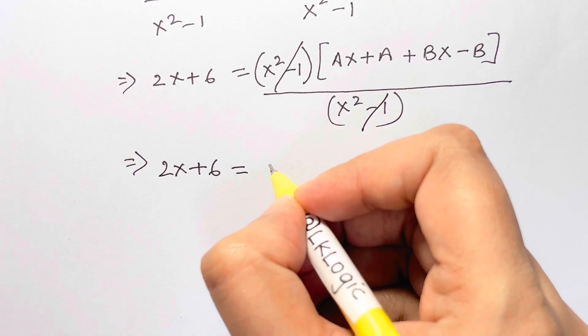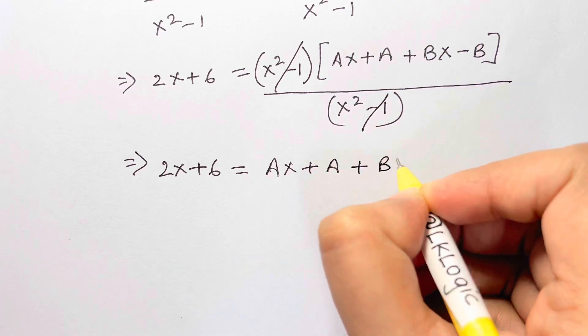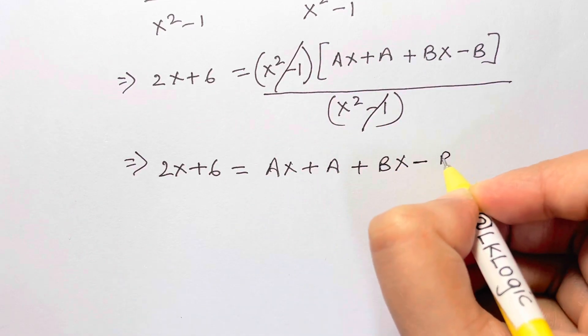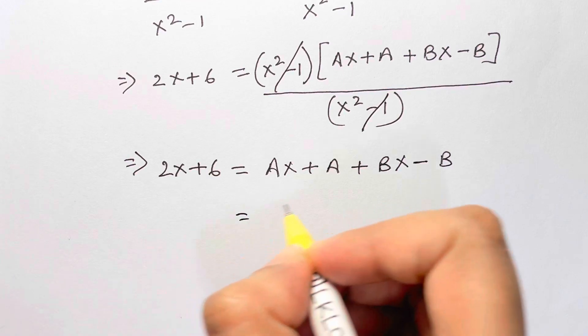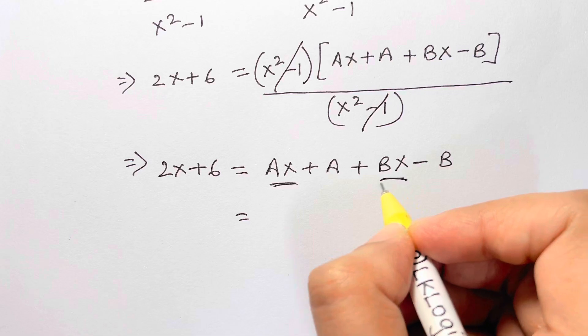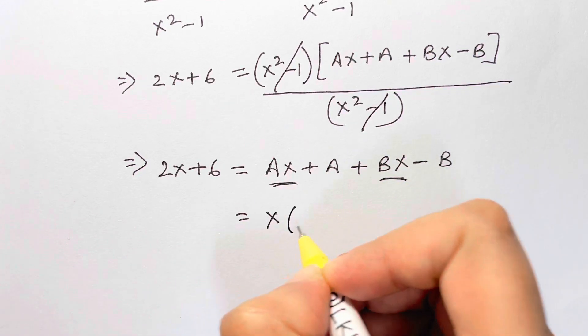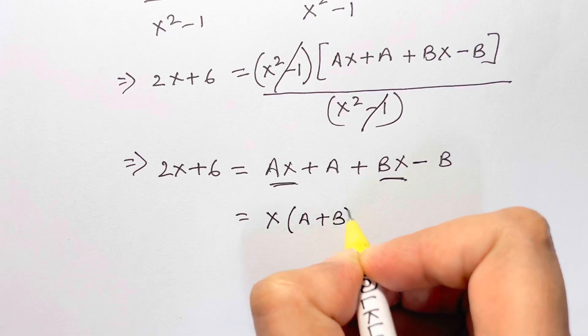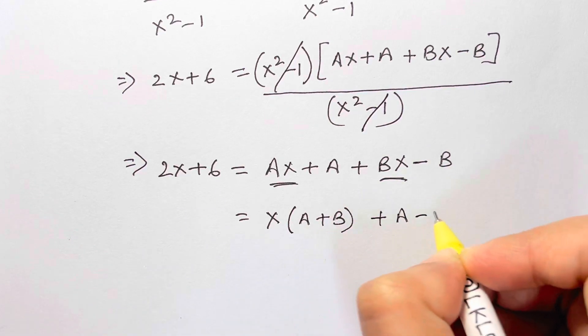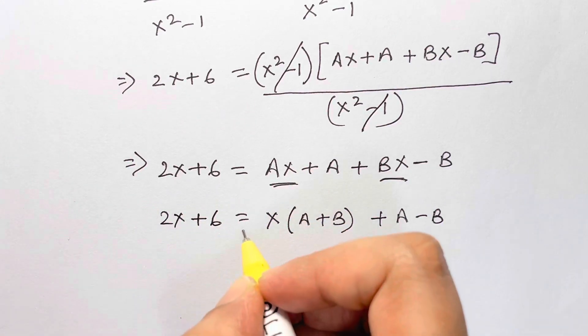So I'm left with 2x plus 6 is equal to Ax plus A plus Bx minus B. Now what I'm going to do is take x—here I have 2x terms—so I'm going to take it out as common: x times A plus B, then I have plus A minus B. And here I have 2x plus 6.